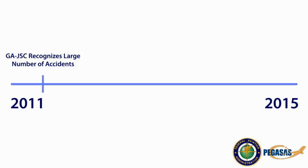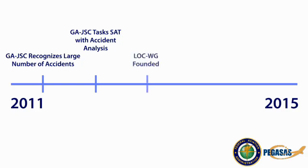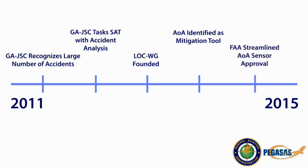In 2011, the General Aviation Joint Steering Committee, or GAJSC, recognized the need to address loss of control accidents and started researching ways to mitigate these events. They tasked the Safety Analysis Team with analyzing accidents caused by loss of control. Following those findings, the Loss of Control Working Group was founded to research and make recommendations. The working group determined that angle of attack displays could be a useful mitigation strategy for general aviation aircraft. Following these findings, the FAA streamlined the approval process for various angle of attack devices, deeming them minor modifications to the aircraft, which require less approval than major modifications.